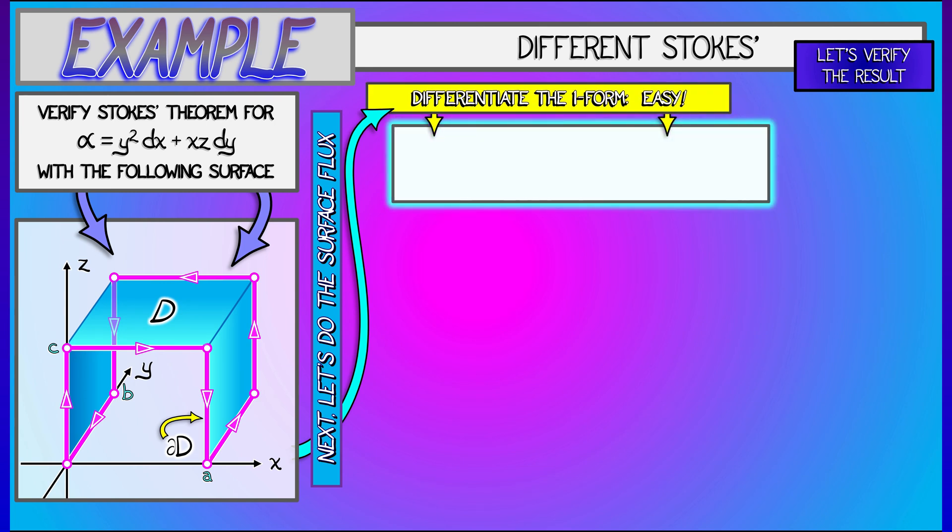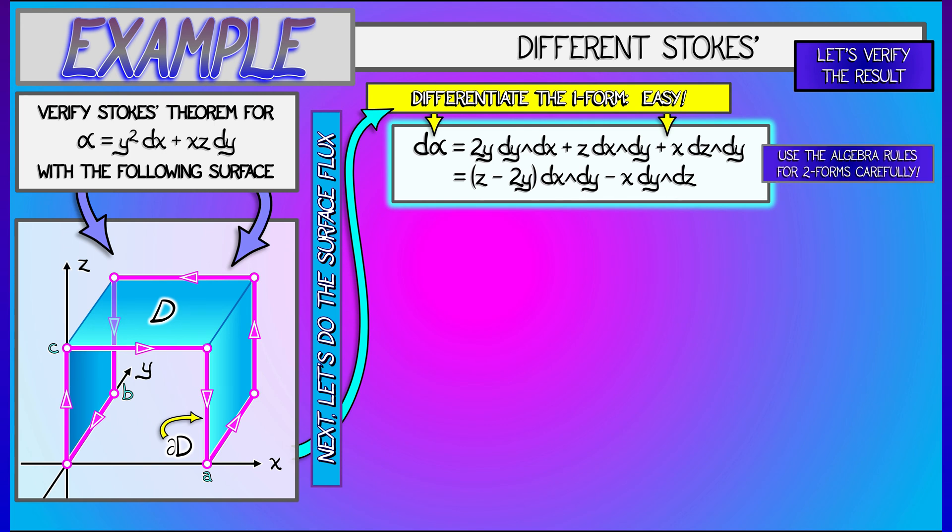The first thing to do is, of course, to compute d alpha. That is going to be 2y dy wedge dx plus, using the product rule, z dx wedge dy plus x dz wedge dy. With some careful algebraic simplification of that two-form, I get quantity z minus 2y dx wedge dy minus x dy wedge dz.